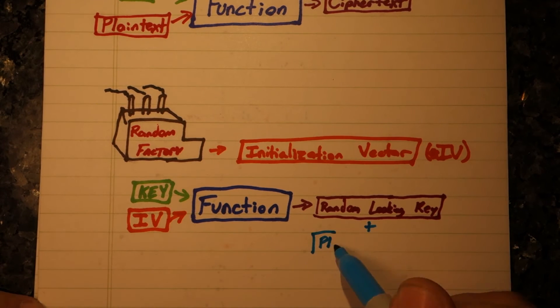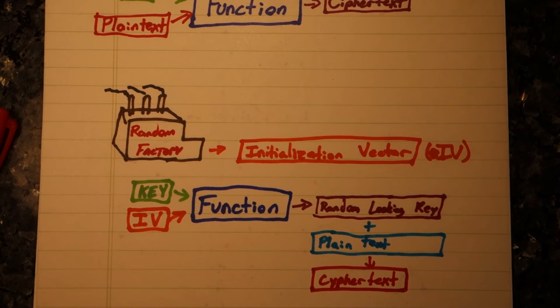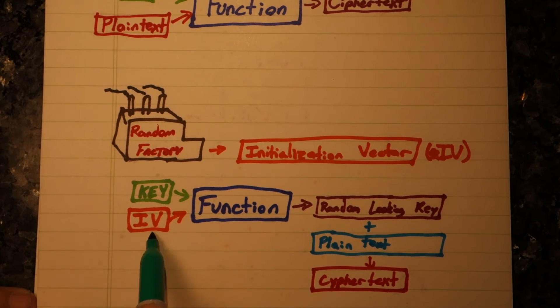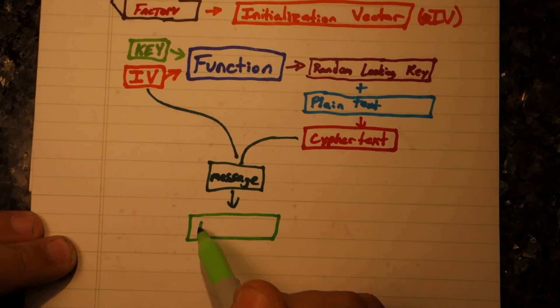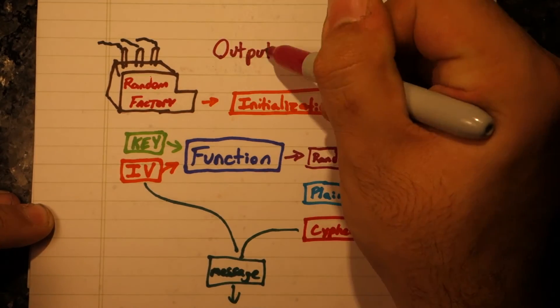One way to use this would be to encrypt the IV directly, using the output as a pad for our plain text. Let's call this output feedback.